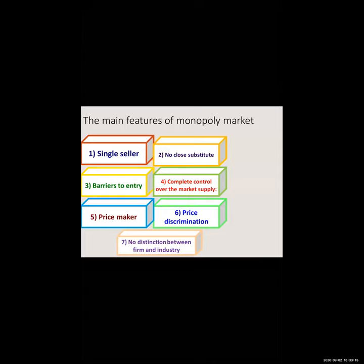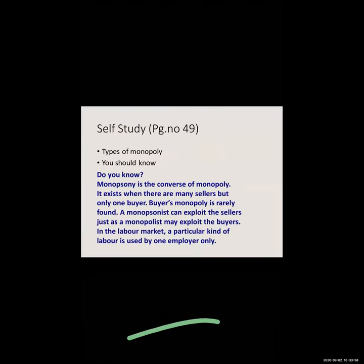The concept is now clear. In the next lecture, you will take one example, explain the product, show it has no close substitute, entry is restricted, there is complete control over market supply, the owner is a price maker, can discriminate price, and the firm itself is an industry. Types of monopoly — this is a self-study part and may be asked in your internal examination. You should know about price discrimination under monopoly as well. We have a total of seven types of monopoly.